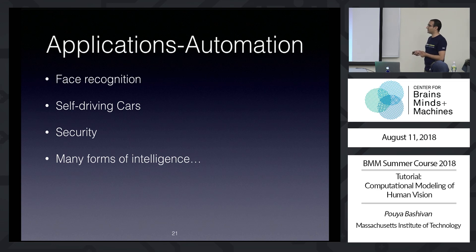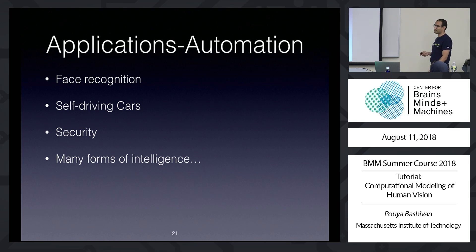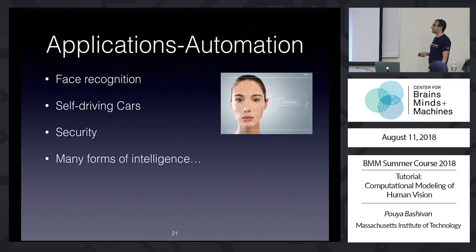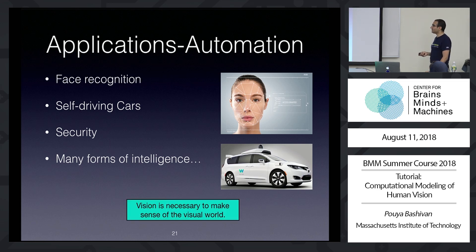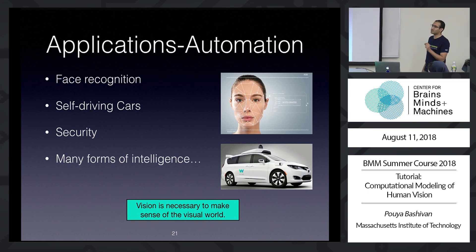Finishing with the models and moving to applications. The first set of applications is in automation — industrial automation. With a good vision model, we can do face recognition, build self-driving cars, use them in security, and many forms of different intelligence. Basically, vision is necessary to make sense of the visual world, and that's an essential part of every intelligent agent.